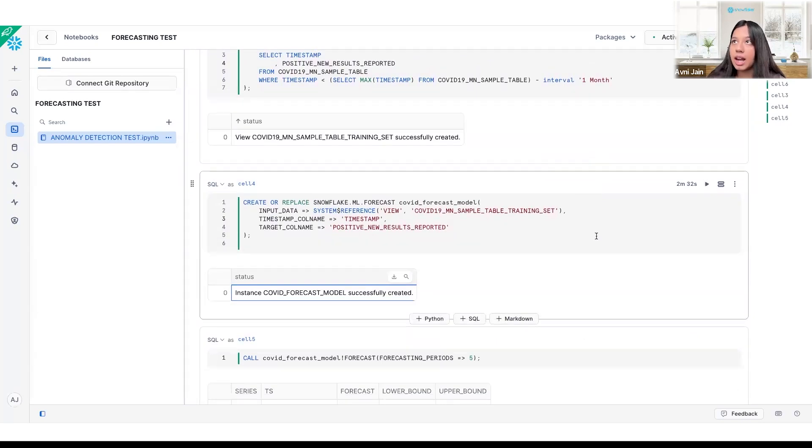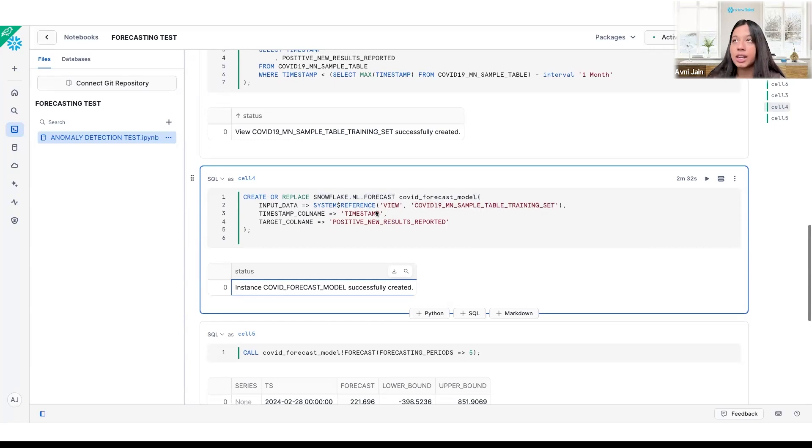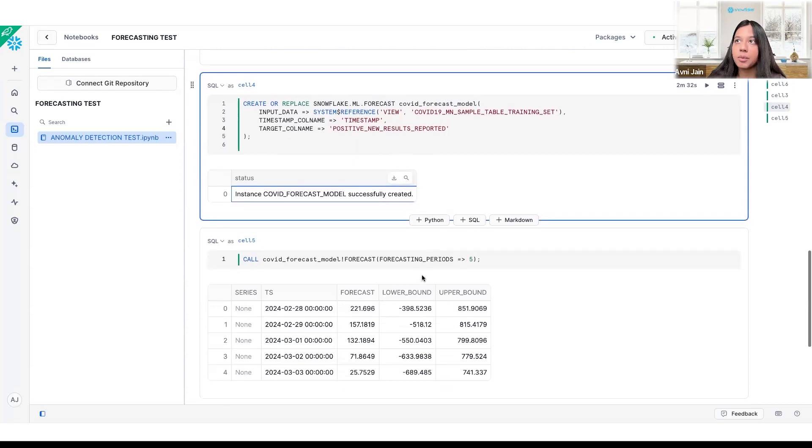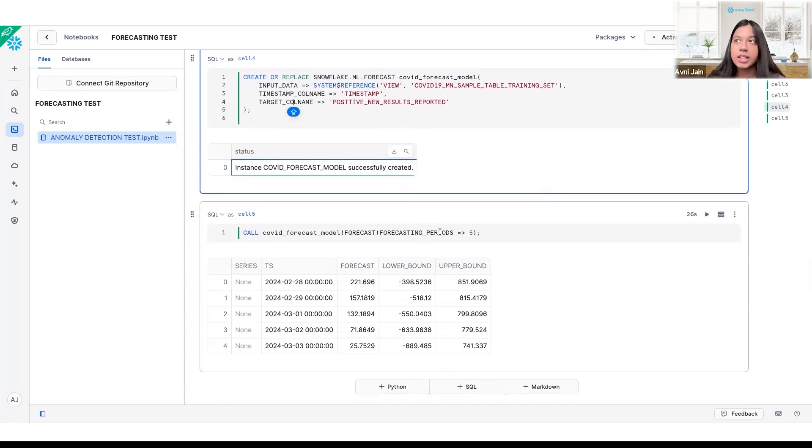Next, to create the actual model, it's very simple. All you're going to do is run this forecast function and name your model. There's a few different inputs you can have but the important ones are input data so in this case it's that training dataset that I created. You also want to input the timestamp column and target column so this is just labeling which one is which. Once you run this, you'll have created the instance of the model and then you can go ahead and call it.